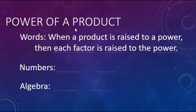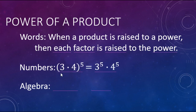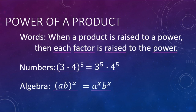When a product is raised to a power, each factor is raised to that power. For numbers, 3 times 4 to the 5th power means both the 3 and the 4 are raised to the 5th power: 3 to the 5th times 4 to the 5th. You can think of it something like the distributive property, but it's not — it's the power of a product property. For algebra, (ab) to the x power means a to the x times b to the x.